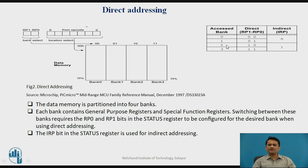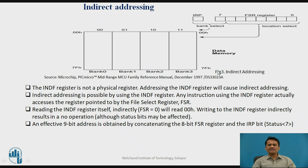Next, in indirect addressing, the IRP bit of the status register is used. If IRP is 0, you can access banks 0 and 1; if IRP is 1, you can access banks 2 and 3. In indirect addressing, an 8-bit address is available in a register called the FSR register, and the remaining 1 bit is taken from the IRP bit of the status register. These 8 bits concatenated with that 1 bit form a 9-bit address to access any location.